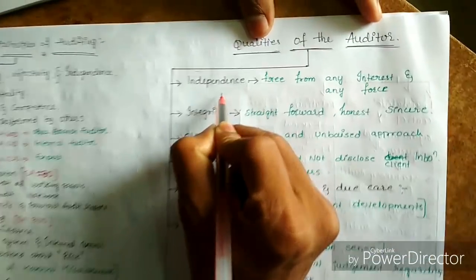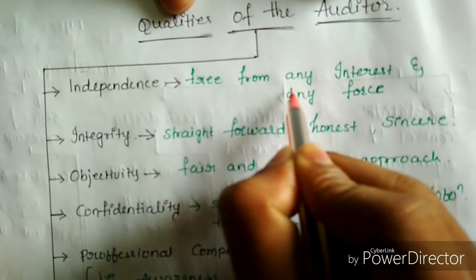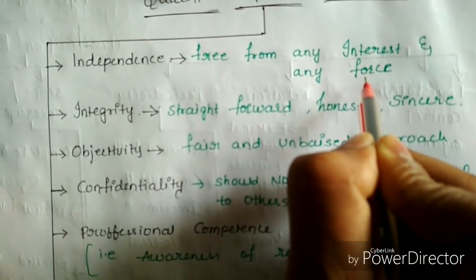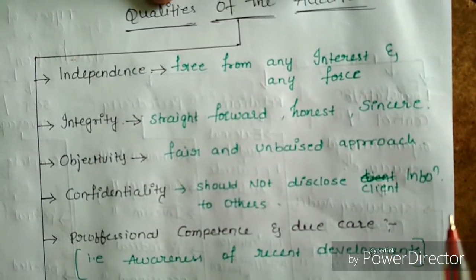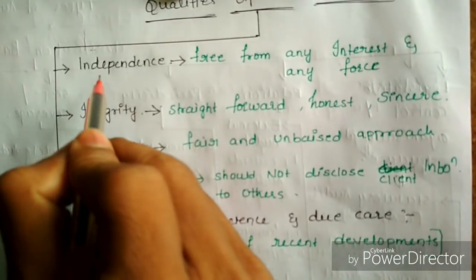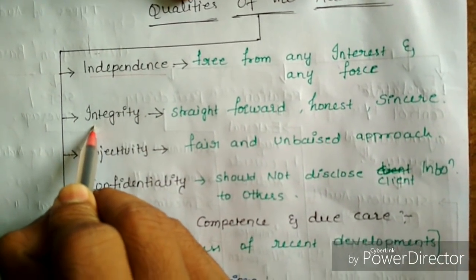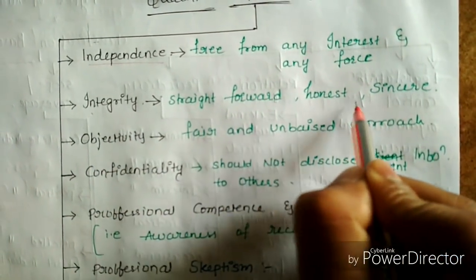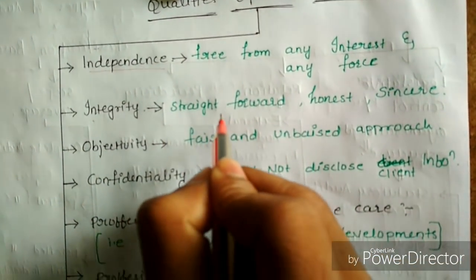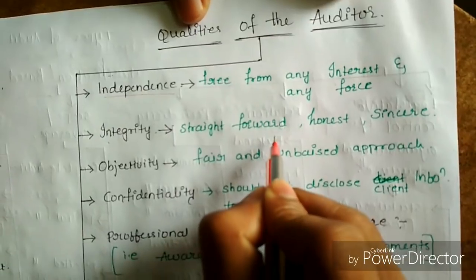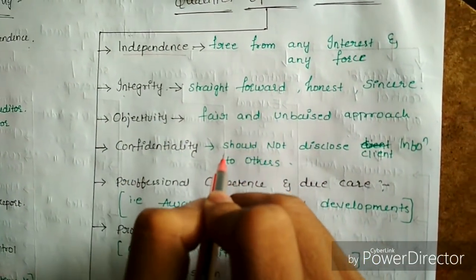Independence: the auditor should be independent in his opinion, meaning free from all forces by management and any interest given by management. He should give his independent opinion. Integrity: the auditor should be straightforward, honest, and sincere in his work. When auditing is going on, he should be straightforward in asking questions and taking explanations from management.